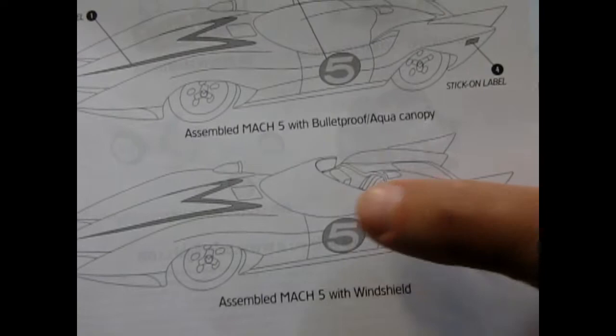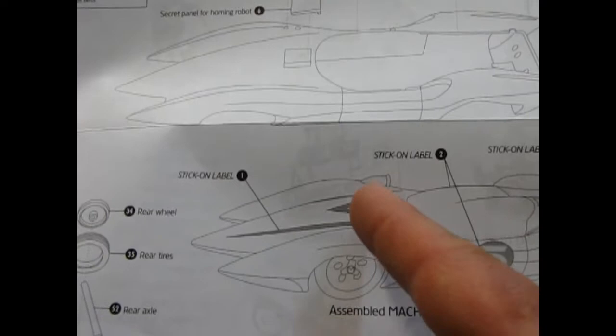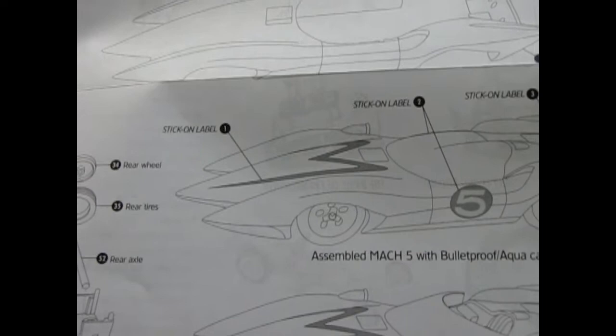It shows here assembled with the bulletproof canopy which gives it more streamline, and then with the regular windshield which leaves it a convertible top. This being a Japanese car it has the rearview mirror on the left side of the car, which is kind of strange because he is driving it from the right hand side. I have no idea why that's like that.